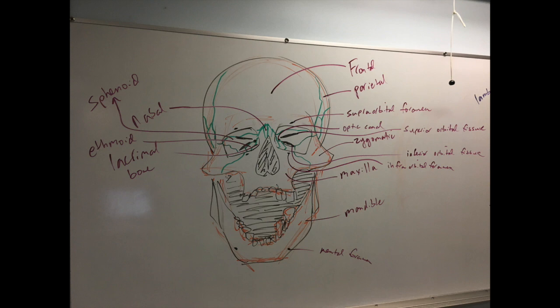Now we've got a couple of holes in the skull that you can see from the outside called foramina. You've got one right here, right above the orbit area — this is called the supraorbital foramen. Then inside the orbit, you've got a series of three holes. That smaller circular one that's more medial than the others — that's your optic canal.